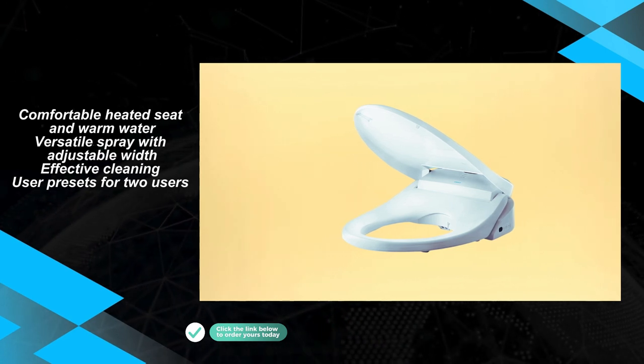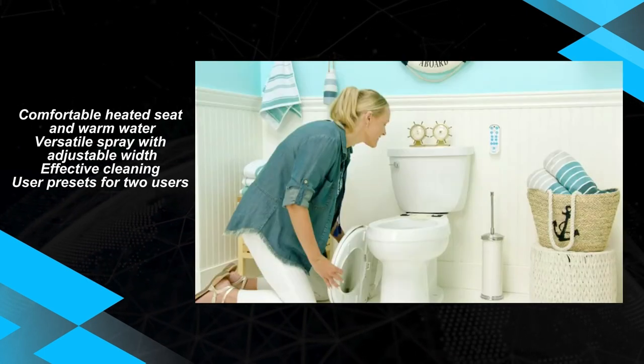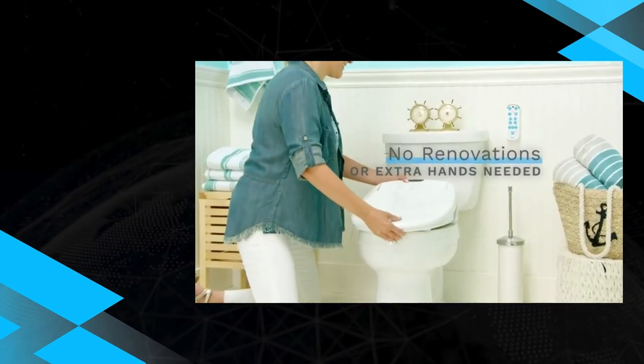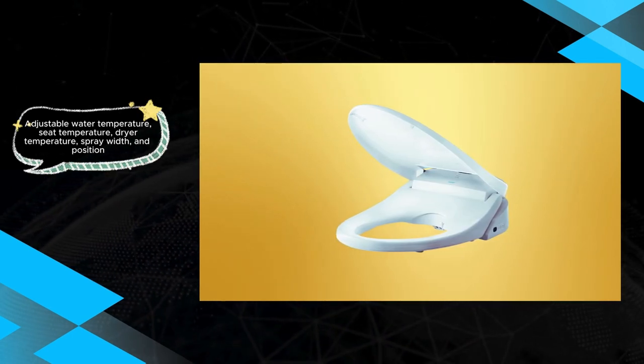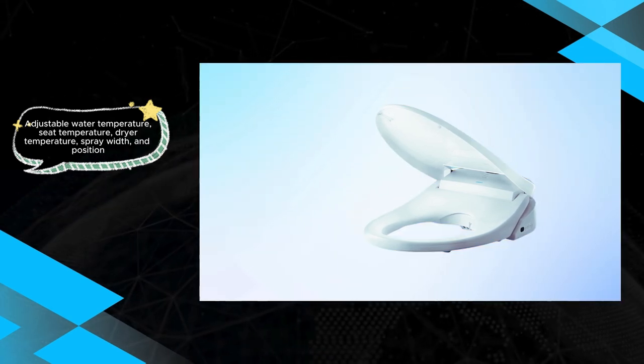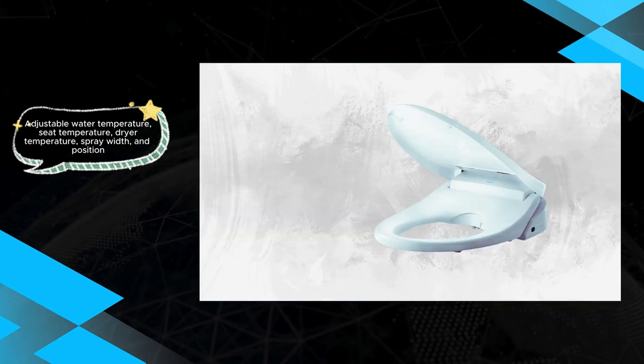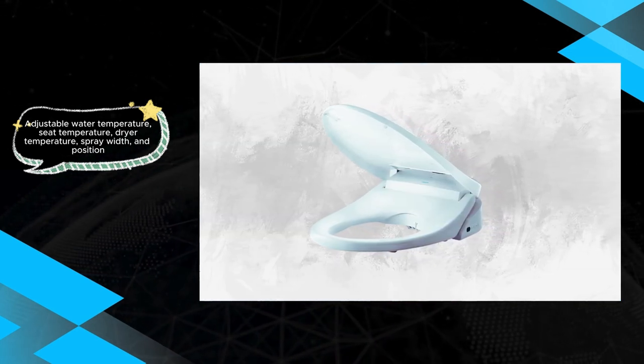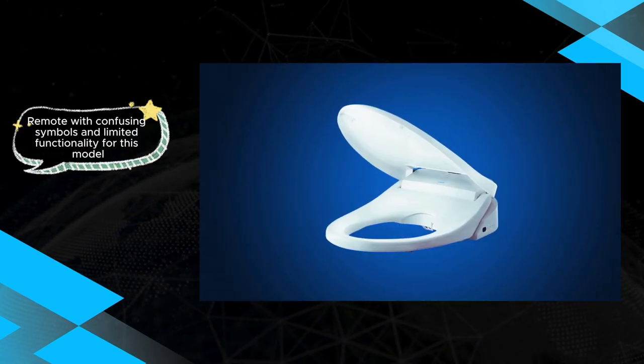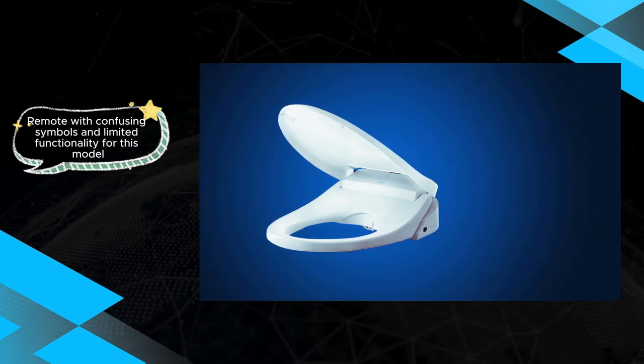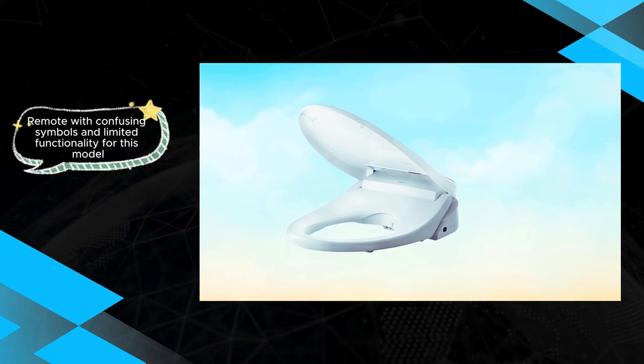Despite its many advantages, the Bidet Seat presents some drawbacks. Its controls can be counterintuitive, requiring manual consultation for operation. The remote's confusing symbols and limited functionality for the specific model add to the frustration, exacerbated by the need for batteries in a difficult battery compartment. Additionally, users may experience slow water startup and the absence of an air dryer. Overall, while the Amigo Luxury Bidet Toilet Seat delivers a comfortable and versatile cleaning experience, its drawbacks in user interface and convenience should be carefully considered, particularly for those prioritizing ease of use and clear controls.